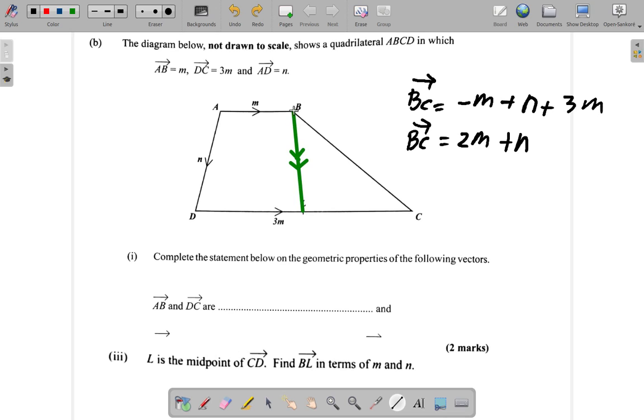We're adding BA. BA is negative M, so BL equals negative M plus AD which is N, plus half of 3M, so 3 over 2M.